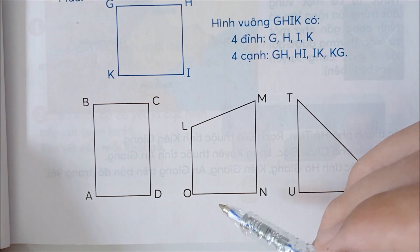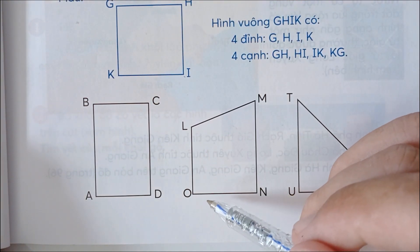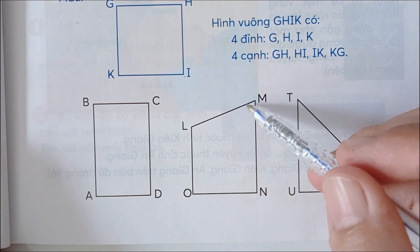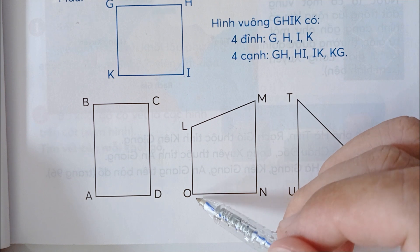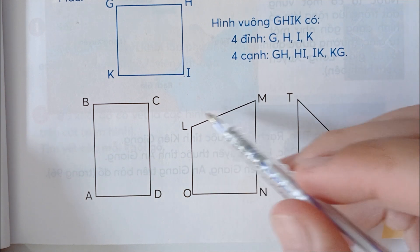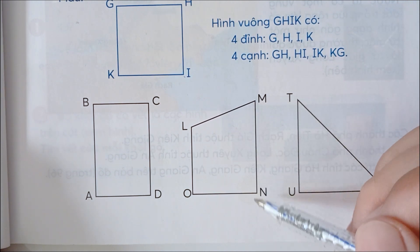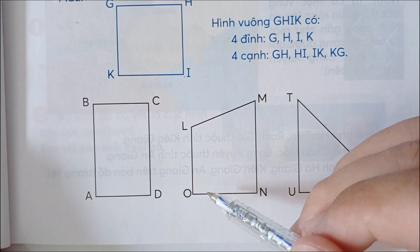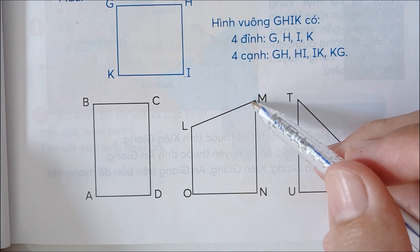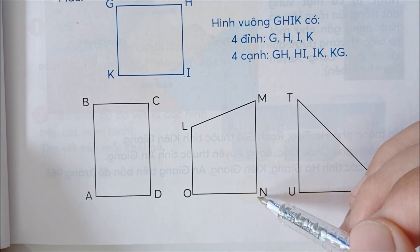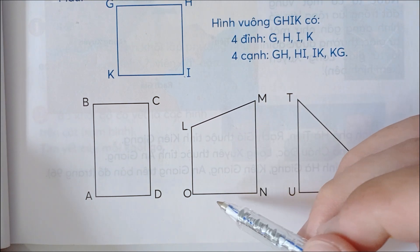Hình tứ giác O, L, M, N có 4 đỉnh là O, L, M, N. Có 4 cạnh là OL, LM, MN và NO.